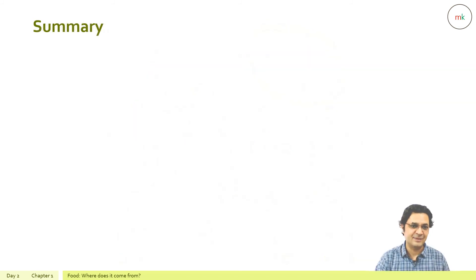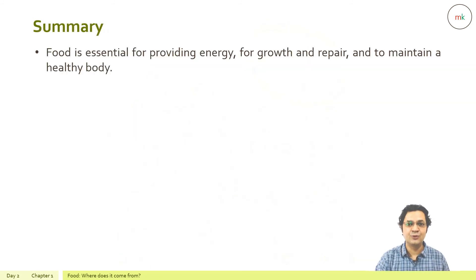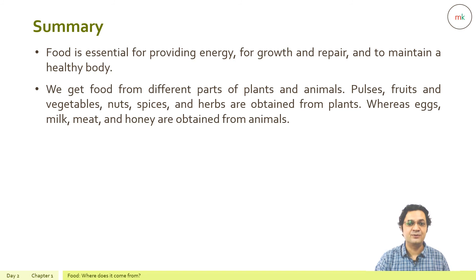Let's summarize the chapter. Food is essential for providing energy, for growth and repair, and to maintain a healthy body. We get food from different parts of plants and animals. Pulses, fruits, vegetables, nuts, spices, and herbs are obtained from plants, whereas eggs, milk, meat, and honey are obtained from animals.